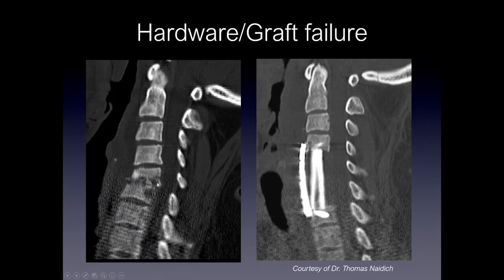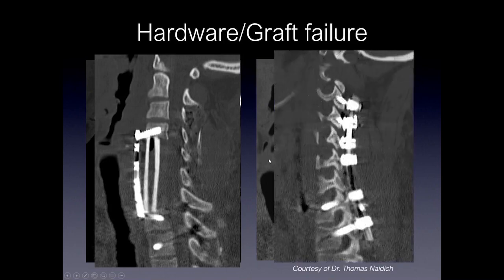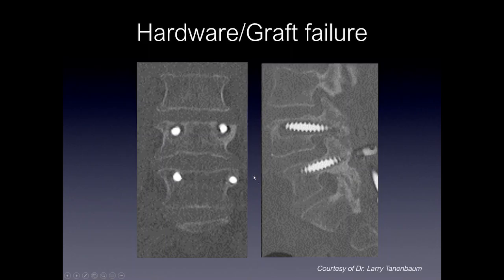Here's another example where a patient had discitis osteomyelitis and ultimately underwent a corpectomy for treatment with a fibular strut graft. On follow-up imaging, the plate was pushed ventrally or anteriorly away from the vertebral body, ultimately requiring surgery and posterior fusion. In another case, you can see lucency around the screws consistent with hardware loosening from a failure of fusion.